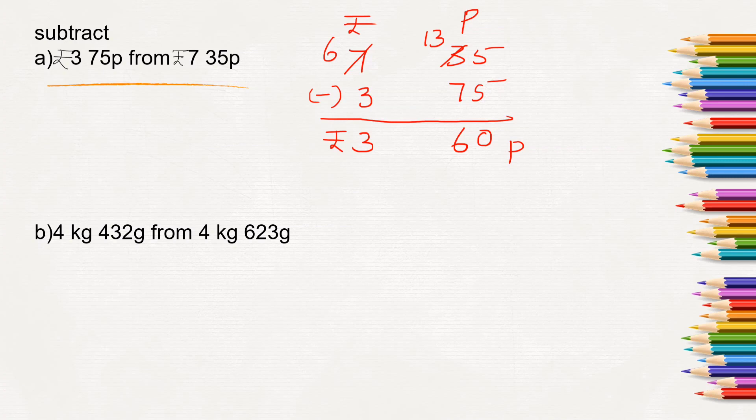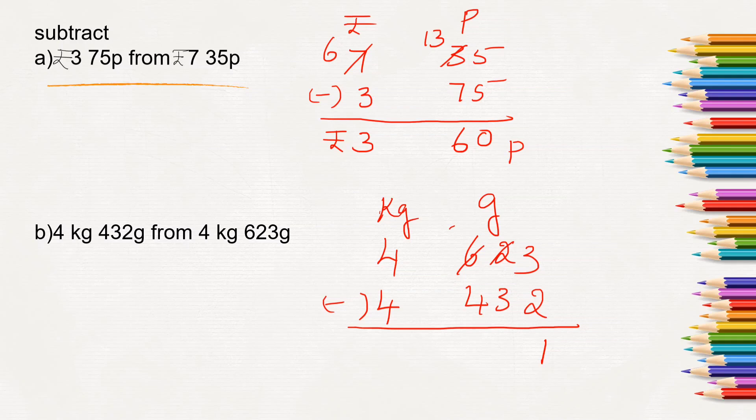Similarly, next question: from 4 kg 432 grams, we have to take away 4 kg 432 grams from 4 kg 623 grams. So we will make 2 columns as kg and grams. From 4 kg 623 grams we will have to take away 4 kg 432 grams. So 3 minus 2 will be 1. From 2 we cannot take away 3, so we borrow. From 6, 6 becomes 5 and 2 becomes 12. 12 minus 3 will be 9. 5 minus 4 is 1 and 4 minus 4 is 0. So we are left with 0 kg and 191 grams.